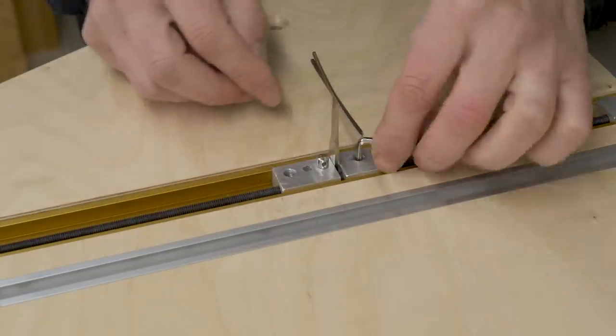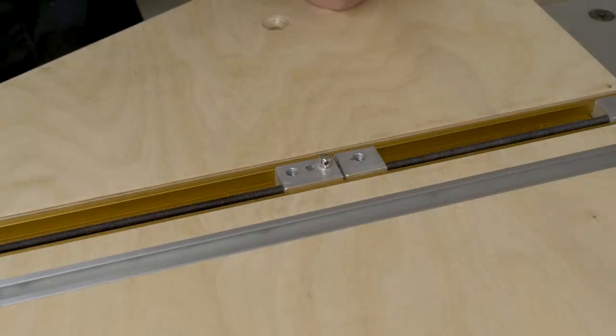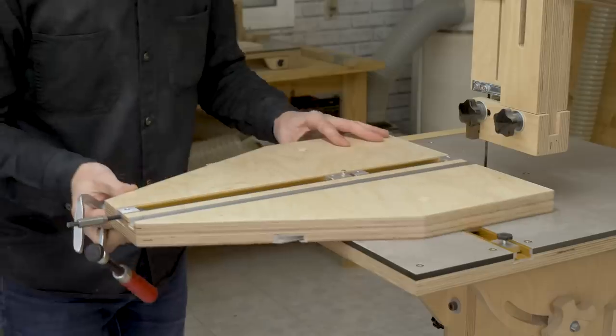Now I'm going to move the T-slot stop about 3mm and hold the jig to the bandsaw table. I want to test whether it's possible to cut without moving the jig.